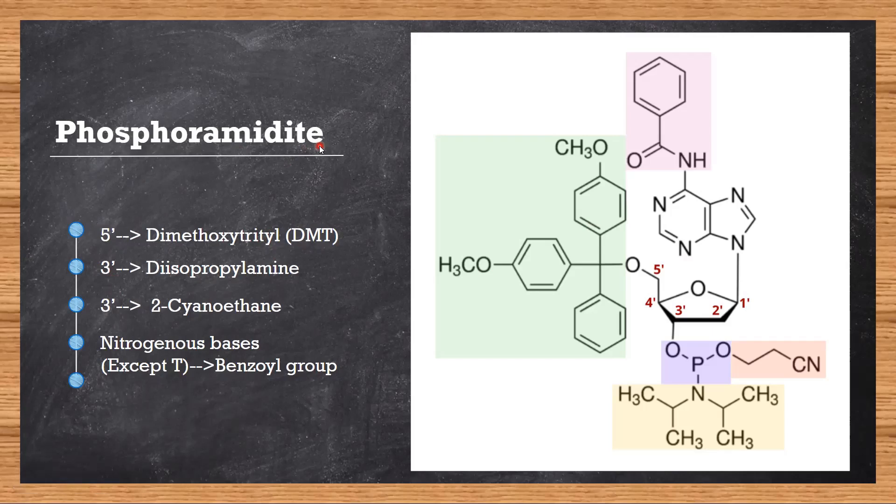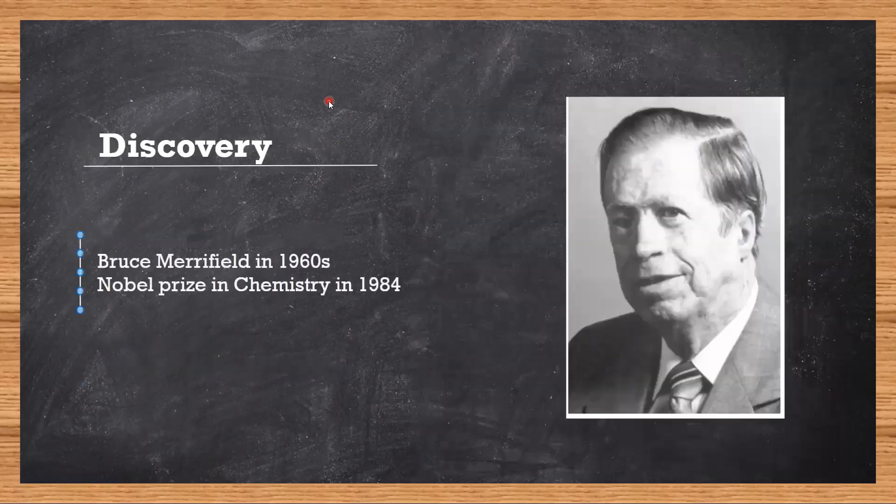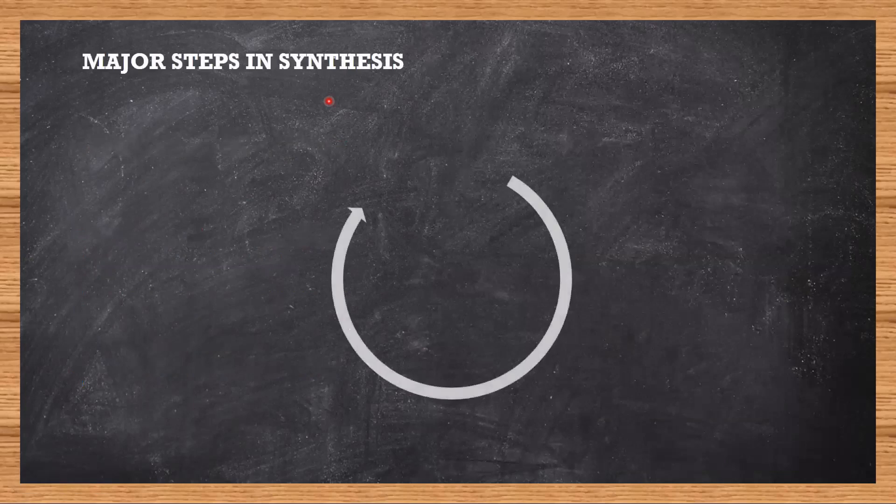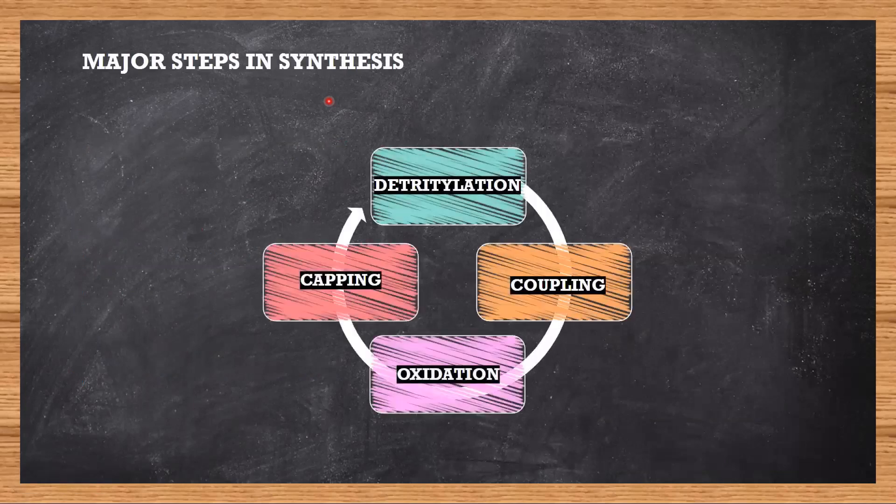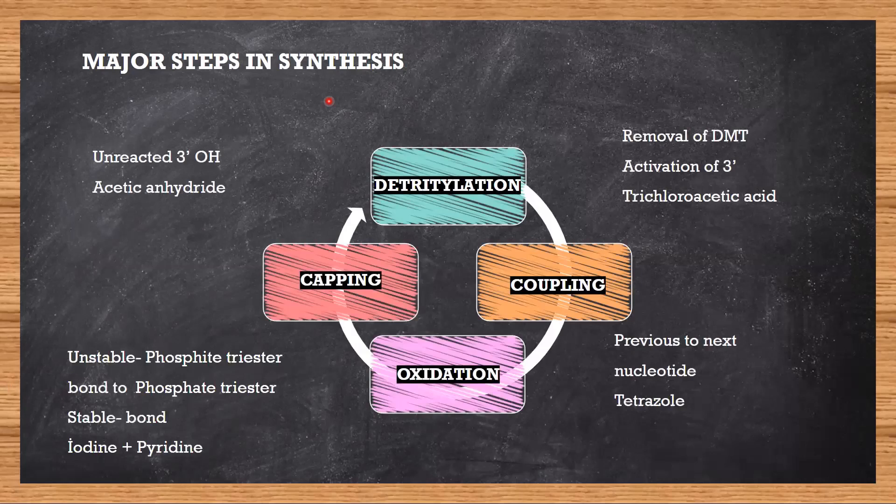This is basically the equivalent of our ATP, GTP, CTP, TTP that we use in the body. Next, who discovered this method? It was given by Sir Bruce Merrifield, for which he received a Nobel Prize in 1984.